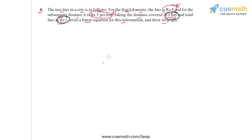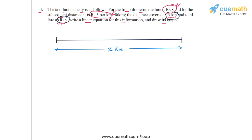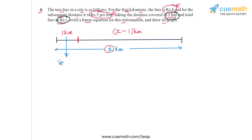Suppose I represent the journey of the taxi using a visual model. It shows a journey of a total of x kilometers. The first kilometer is marked separately, and the remaining journey will be x minus 1 kilometers. So for the first kilometer, the fare will be rupees 8, and for the remaining x minus 1 kilometers, the fare will be rupees 5 per kilometer.